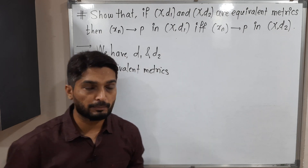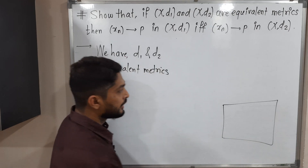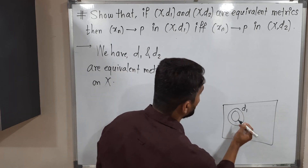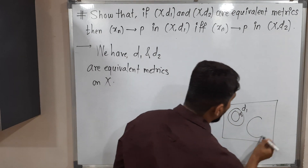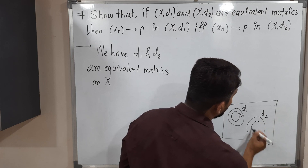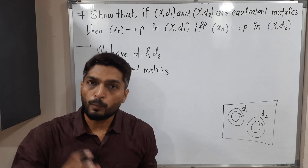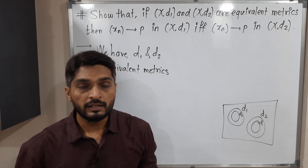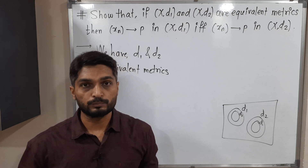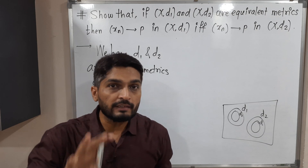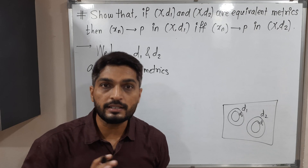Let us recall the definition of equivalent metrics. When we say two metrics are equivalent, suppose this is a metric space (X, D). If you have any D1 open ball, you will find some D2 open ball which lies inside it. And if you have any D2 open ball, then there is a D1 open ball inside it. It means every D1 open ball contains a D2 open ball and every D2 open ball contains a D1 open ball.